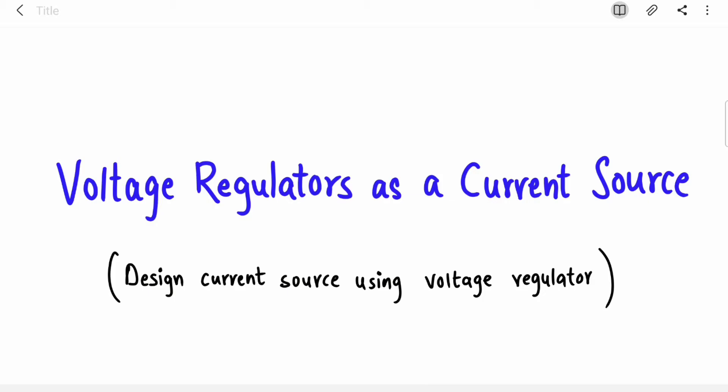It is very easy to use a voltage regulator as a current source. In previous videos we covered what are voltage regulators, their different types, and performance parameters. Now we are going to study how to convert it to a current source.